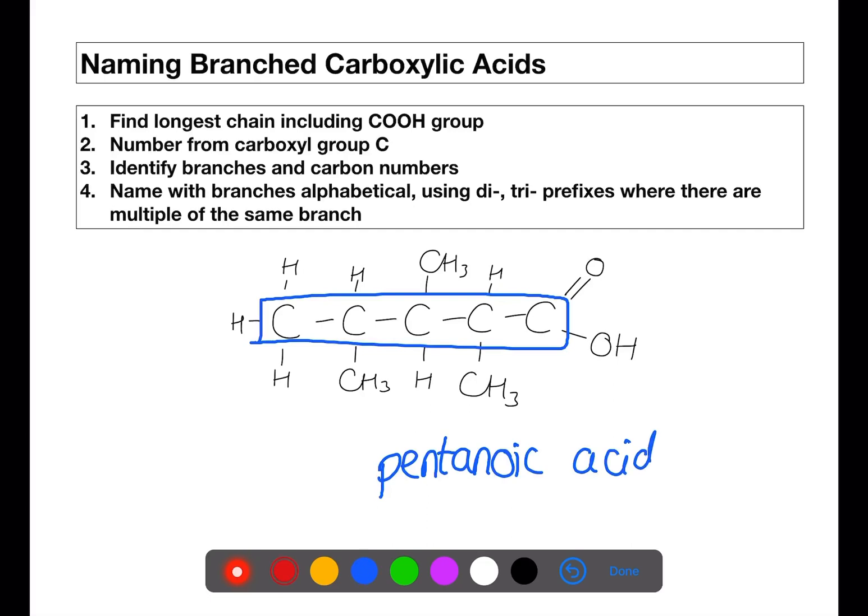We then number from the end with the carboxyl group including that carbon. And then identify our branches. We have three branches on this molecule and they're all of the same type. They all contain one carbon so our methyl branches. They're on carbons two, three and four.